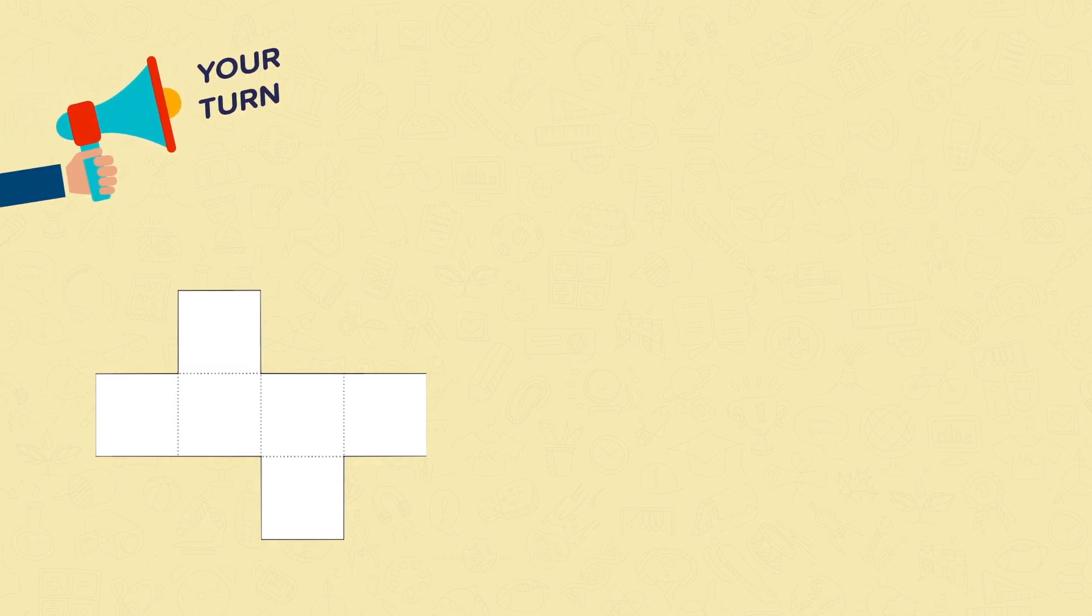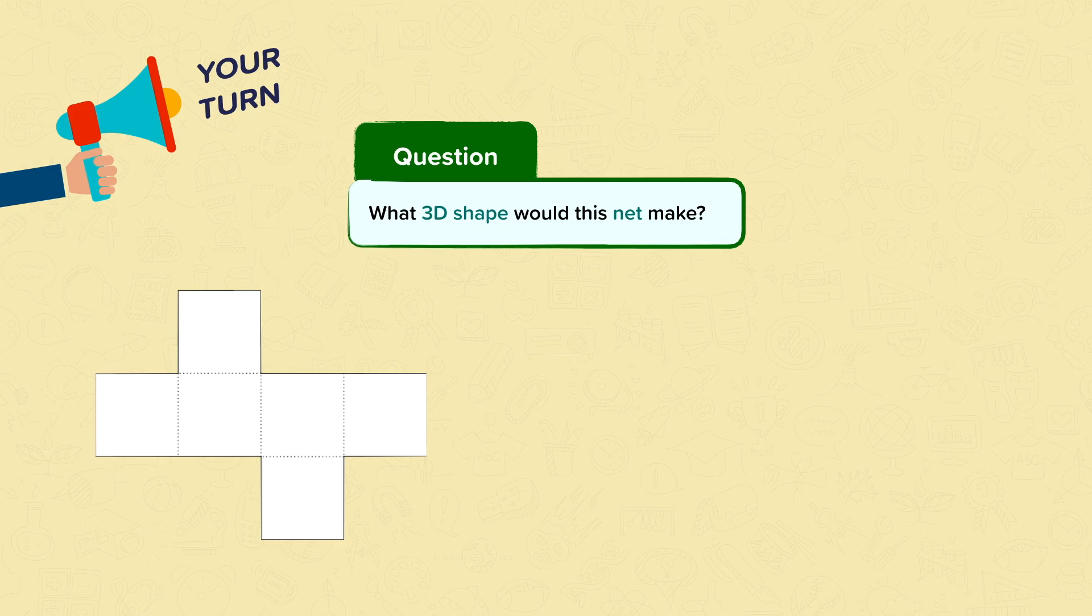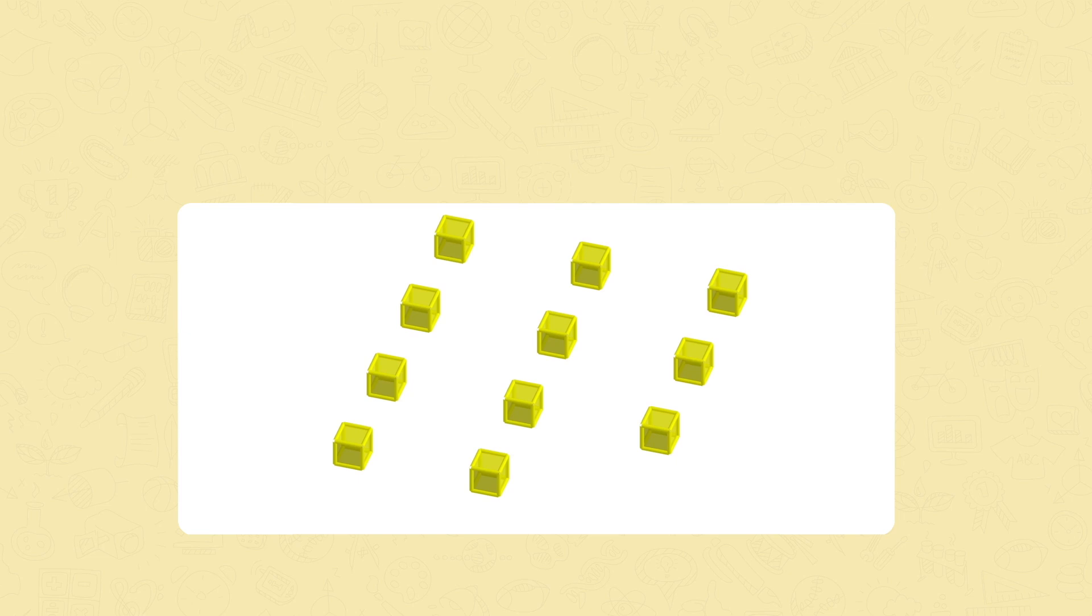Now it's your turn. What 3D shape would this net make? It has six square faces. So we know it makes a cube. A cube can be made from 11 different nets.